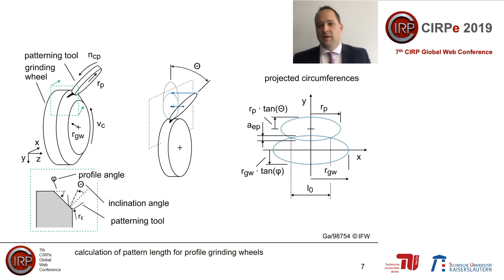In order to transfer this to profile grinding wheels, two angles have to be defined and considered. The angles are shown on this slide on the left. The profile angle describes the angle change of the grinding wheel surface. The inclination angle describes the change from the surface normal direction. The calculation of the length of a pattern including the angles can be done by first calculating L0, which describes the geometrical interception of the circumferences. When an angle is applied, this circumference has to be projected into the surface normal direction, distorting the angle to an ellipsis, as shown in the middle. On the right, you can see that this is similar for the grinding wheel with its profile angle.